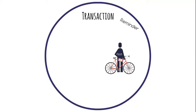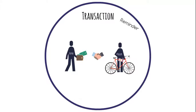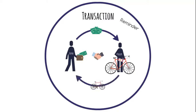For example, a seller offers a bicycle and can sell it to another person who is willing to accept his conditions. We call this person a buyer. When it comes to an agreement between the two, the seller receives the money and the bike changes its ownership. The transaction takes place in the market for bicycles.